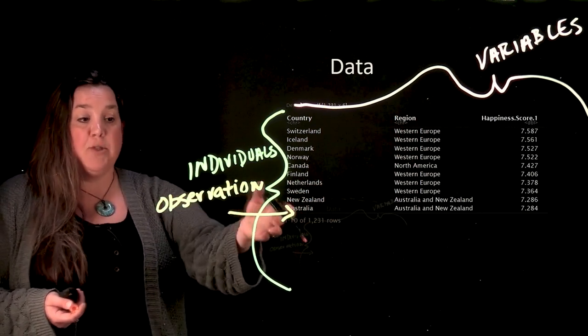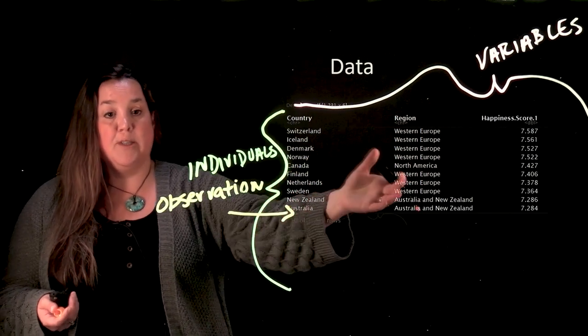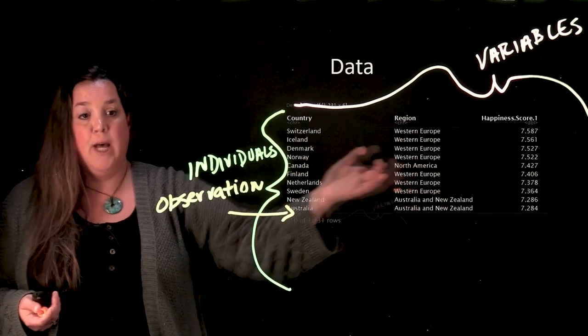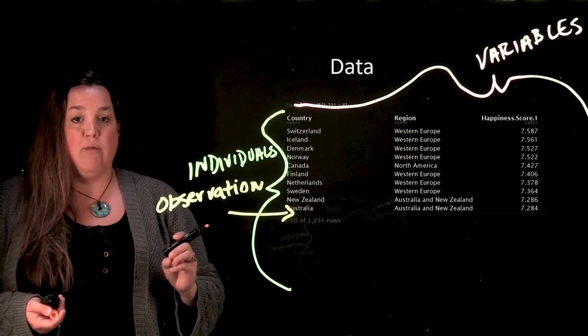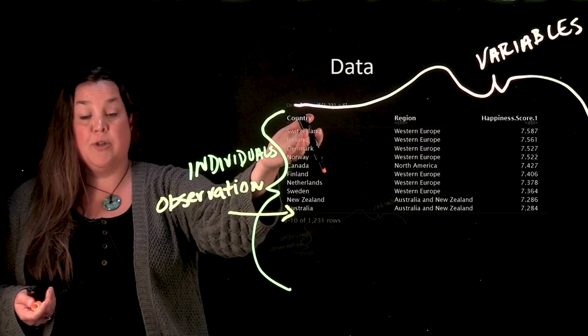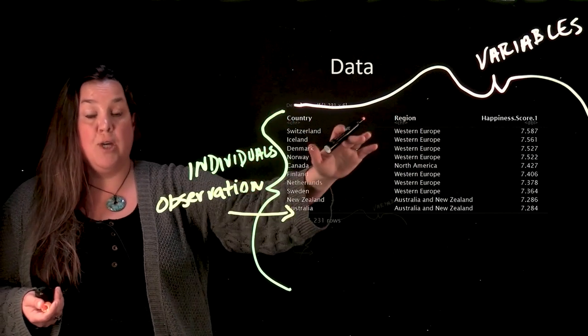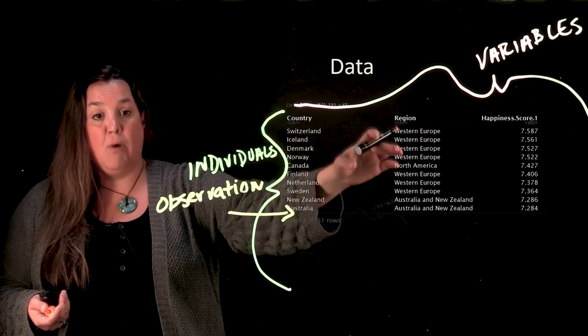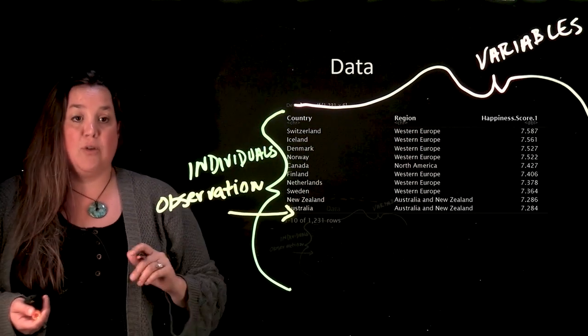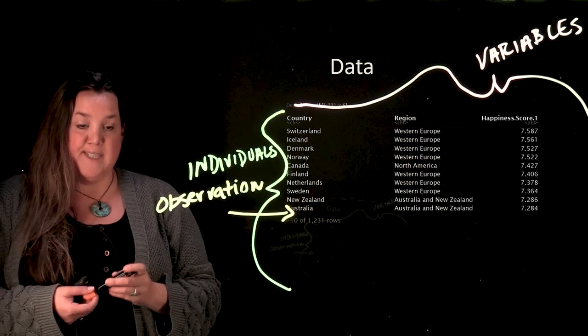So our observation here was Australia, its region is Australia and New Zealand, and then it has a happiness score of 7.284. If we talked about Switzerland, that would be an observation. So it's a single row and that unique information. So Switzerland, Western Europe, and a happiness score of 7.587.